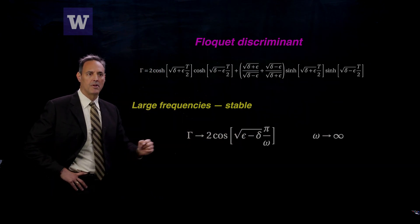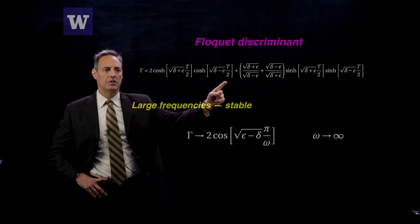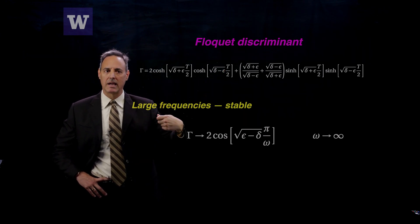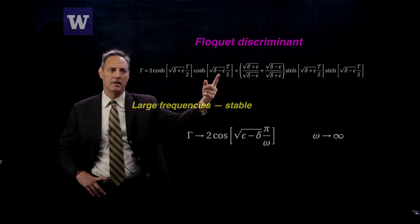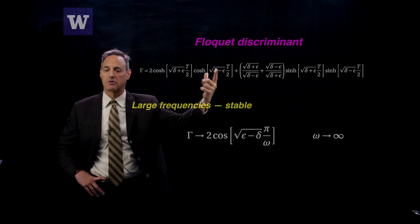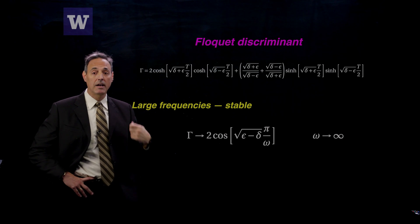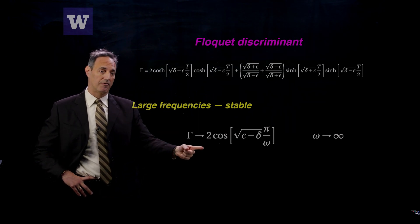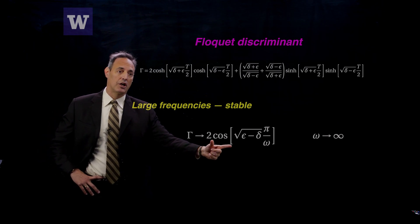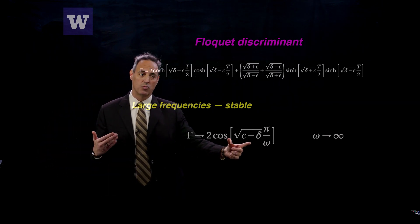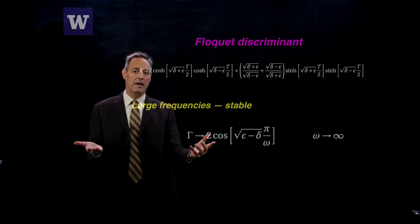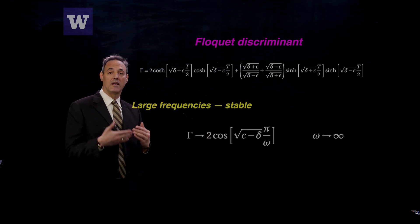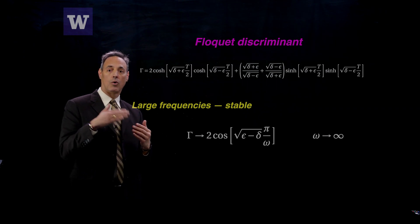And remember that the frequency is related to this capital T here. The frequency of the forcing omega is directly related to the period T, it determines the period T. So for very high frequencies, in other words, a very short period, I can actually find that gamma goes to this value here, cosine is bounded between 1 and minus 1, so this thing here is going to a value of 2. And stability was determined if the Floquet discriminant was 2 or less.